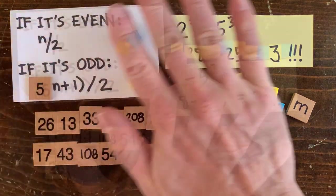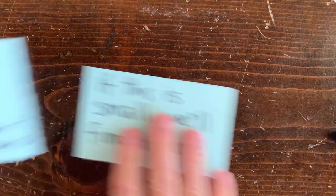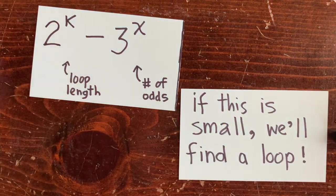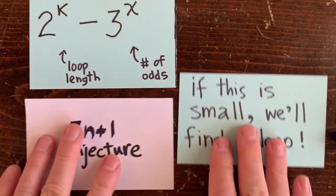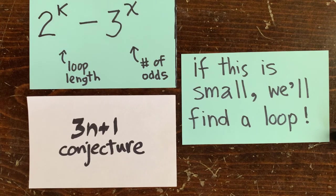So let's keep looking for 3n plus 1 loops. And whenever 2 to the k minus 3 to the x is very small, we might find a 3n plus 1 loop. In other words, if we can find a 2 to the k that's very close to some 3 to the x, our chances are very good. So we're really reducing this to a pretty simple mathematical exploration. So let's keep going. Stay tuned. See you next time.